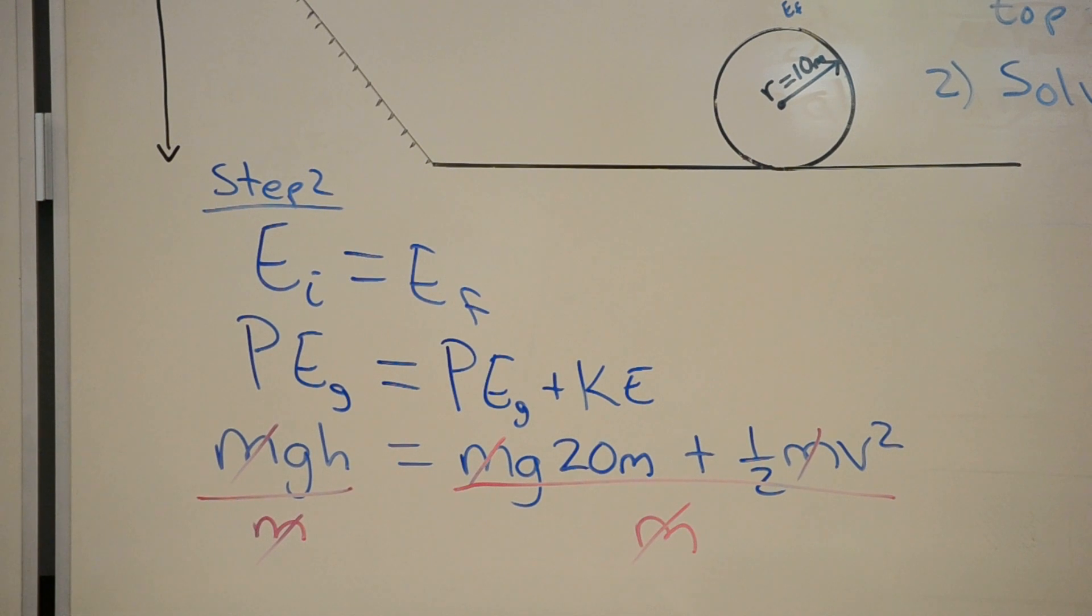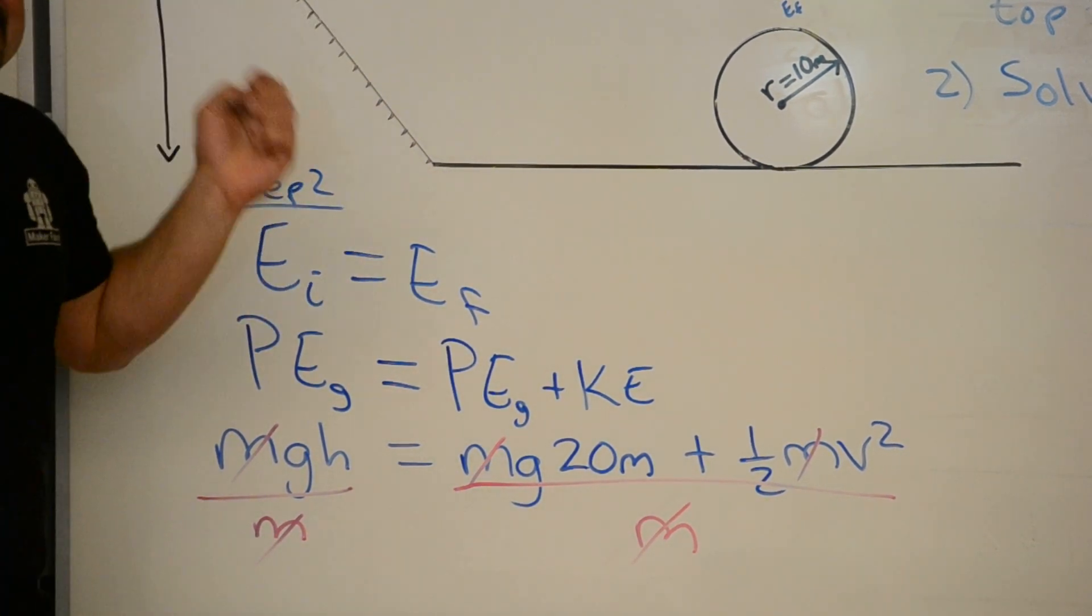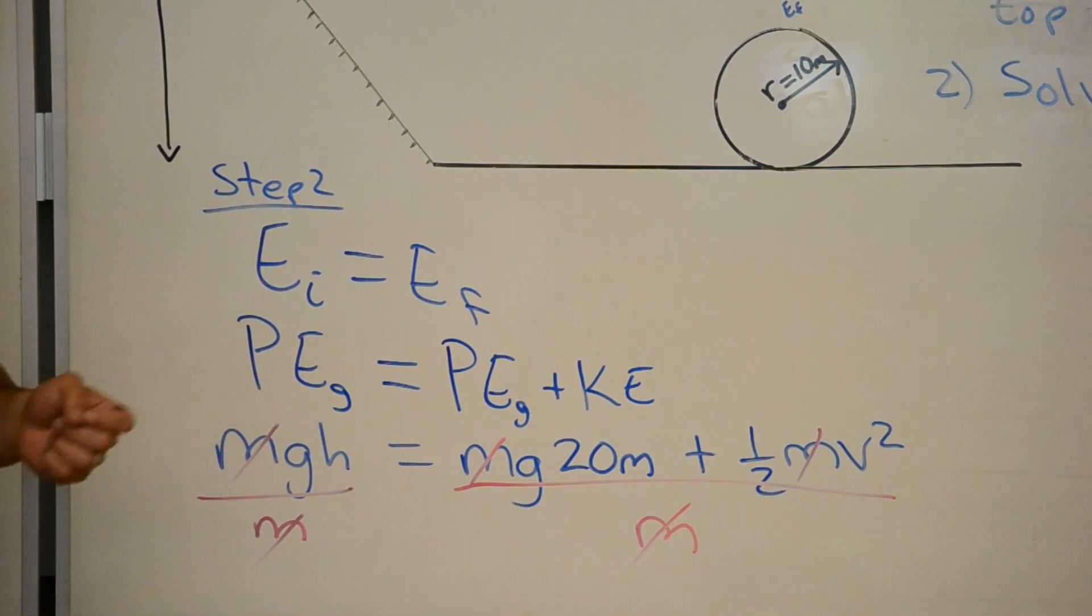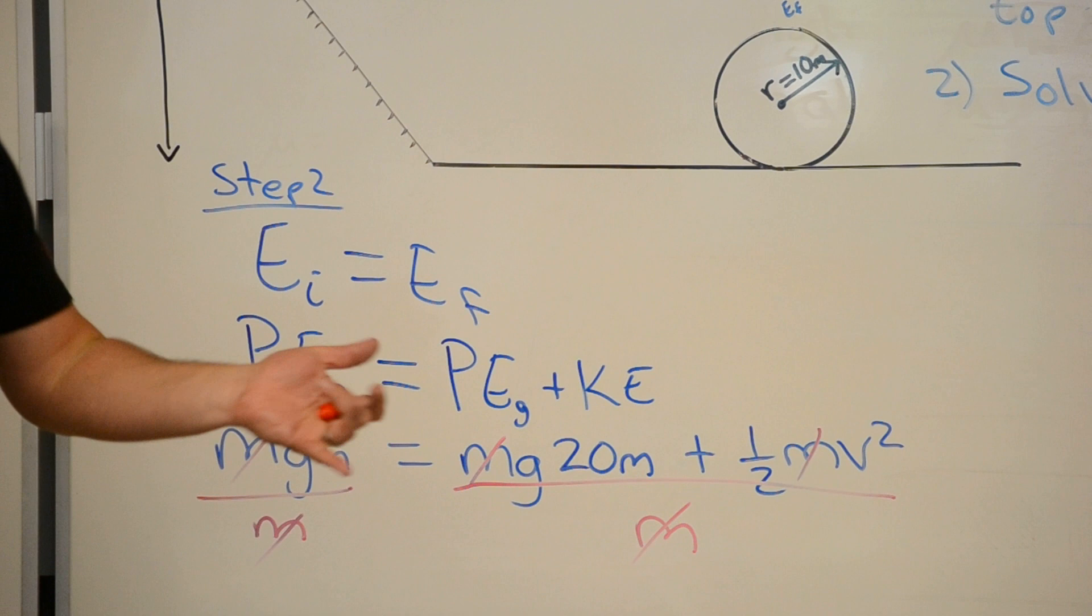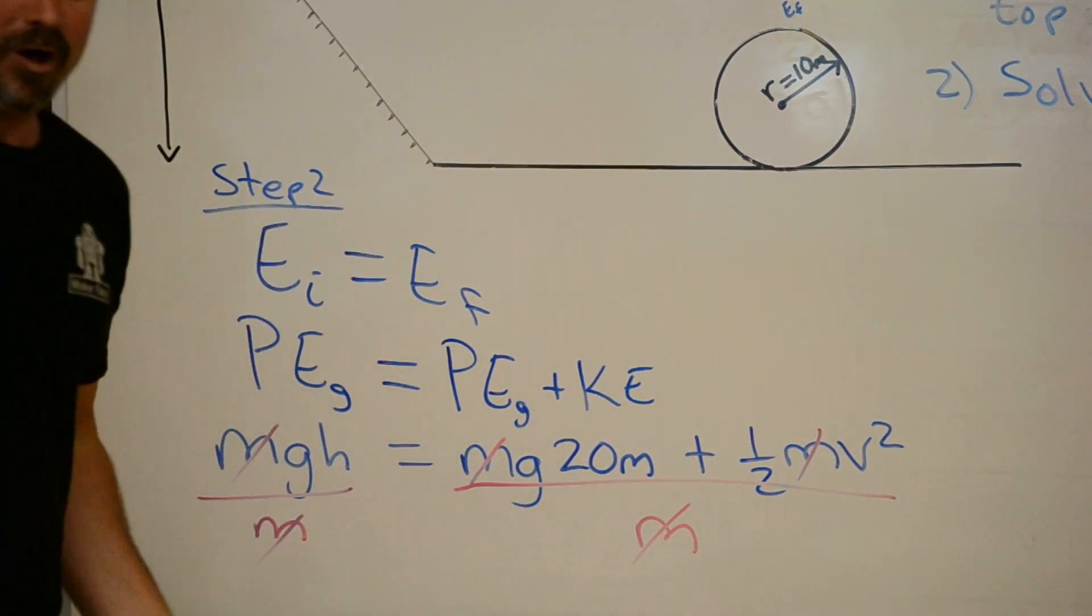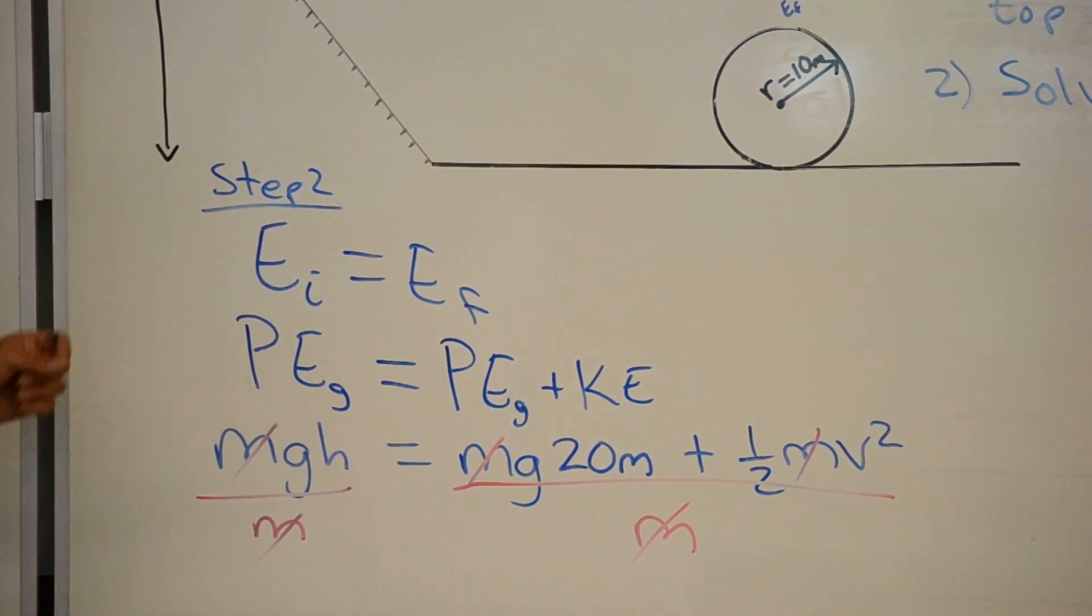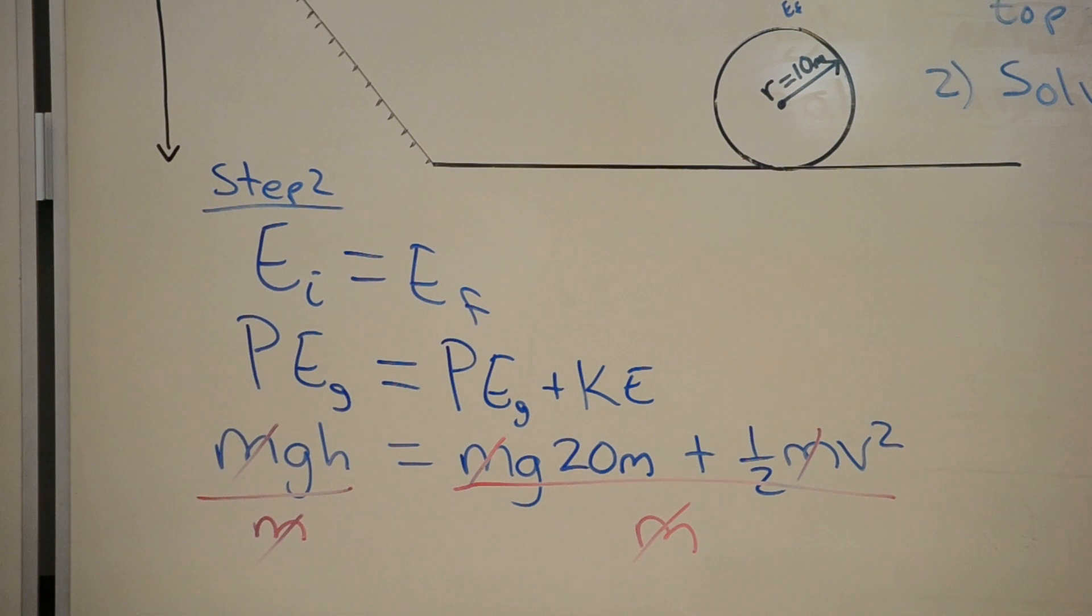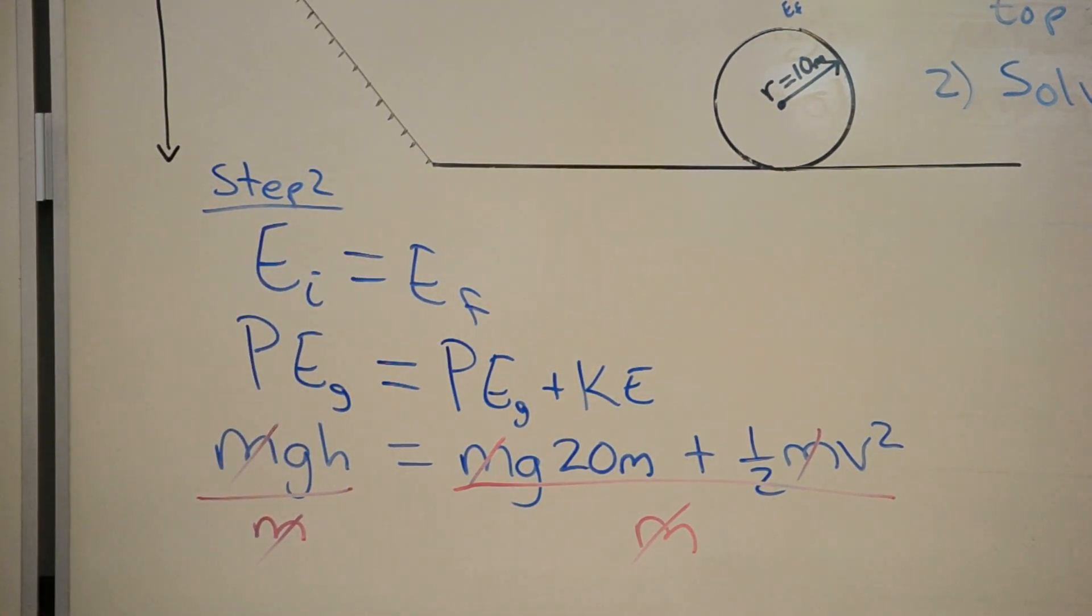This tells us something very interesting. It tells us that that minimum height is independent of the mass of the roller coaster. That's a very good thing, because if you're on a roller coaster with a bunch of really small people, you might worry it's going to go a different speed than it normally does. But don't worry, the speed is independent of the mass of the roller coaster. No matter what type of people get on, the roller coaster is going to be going the same speed.